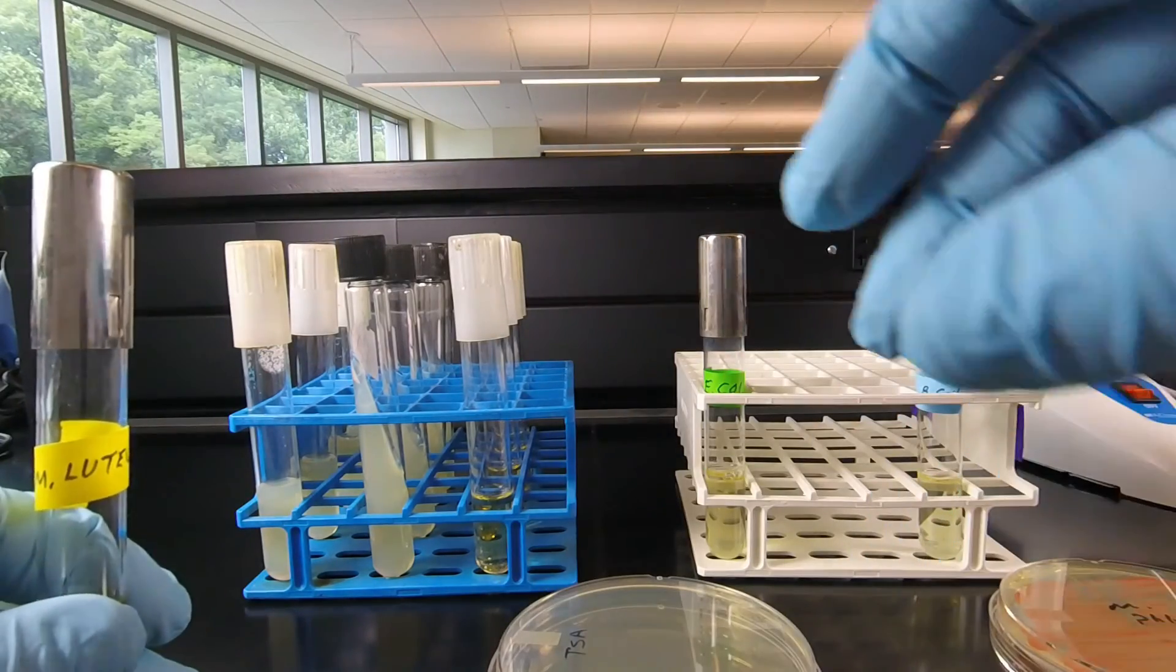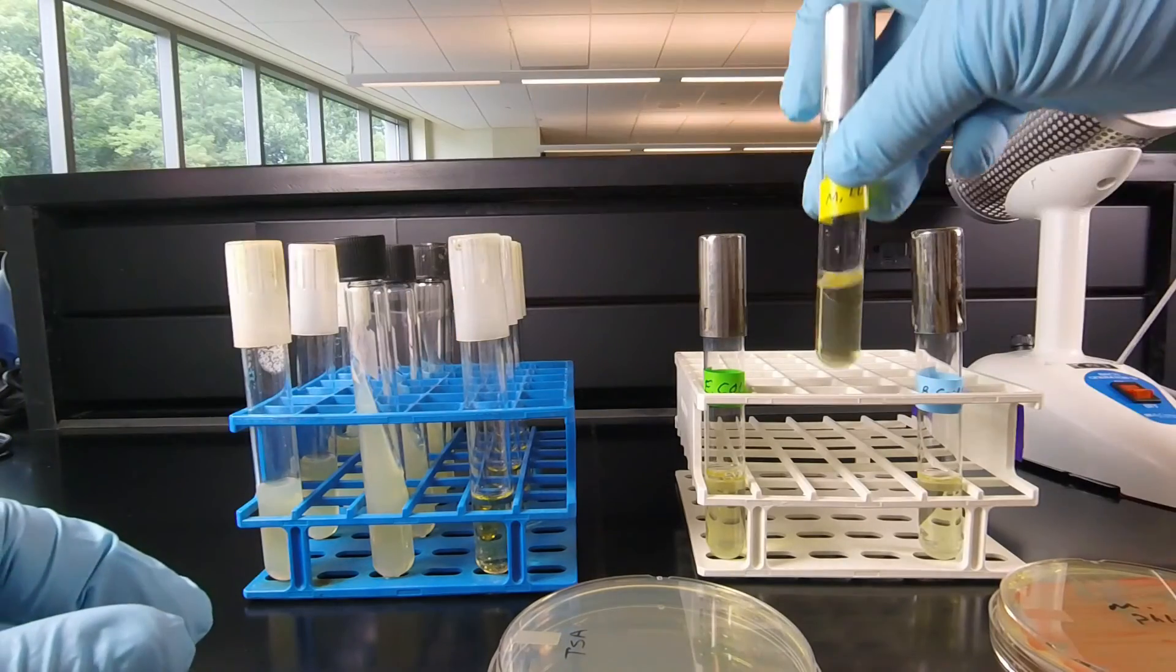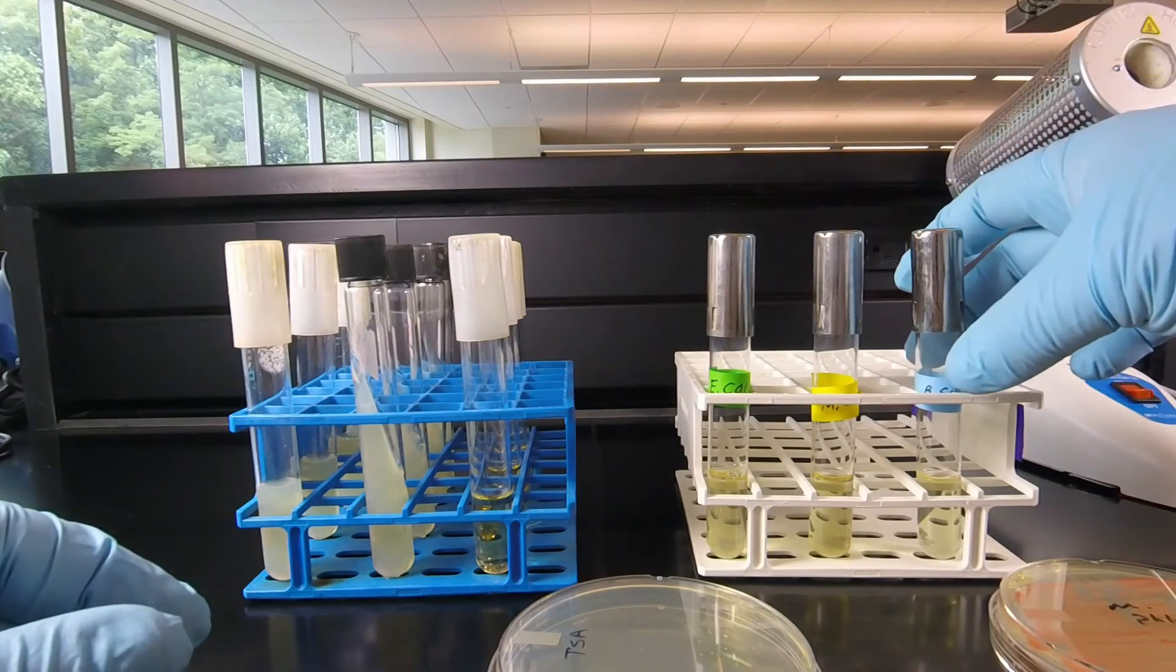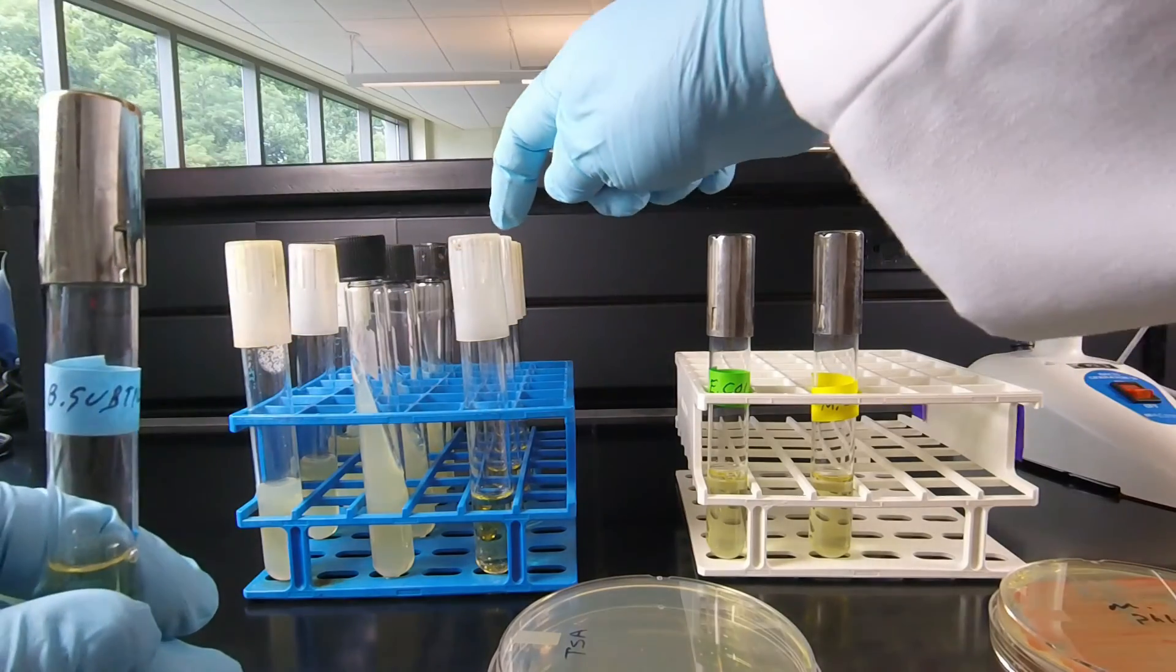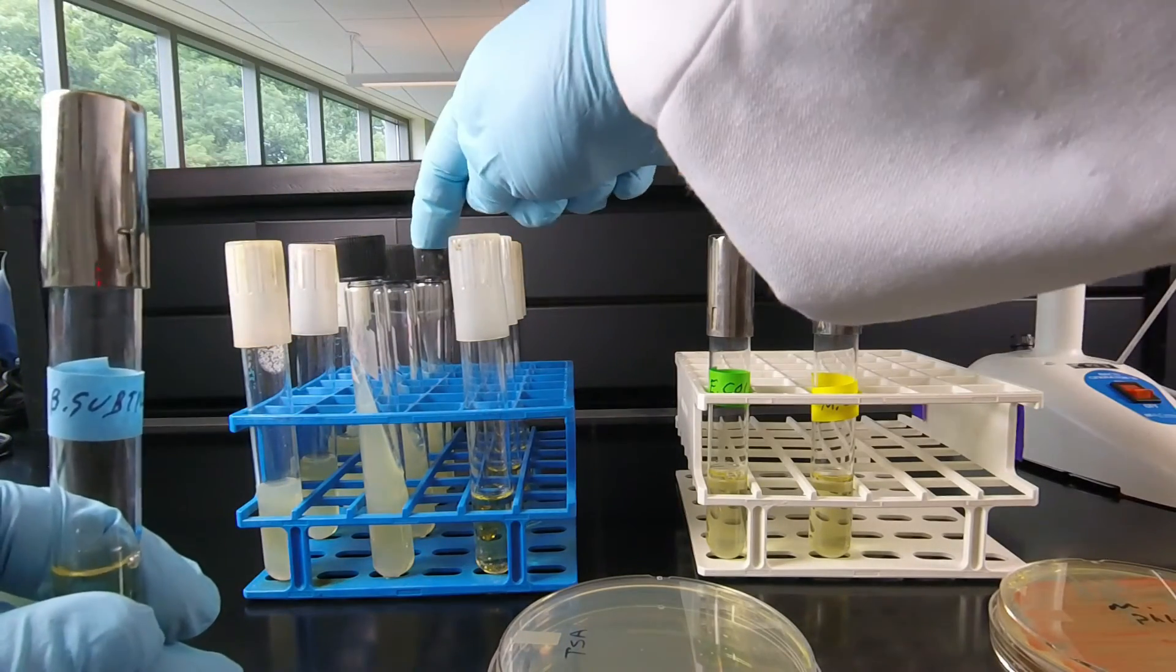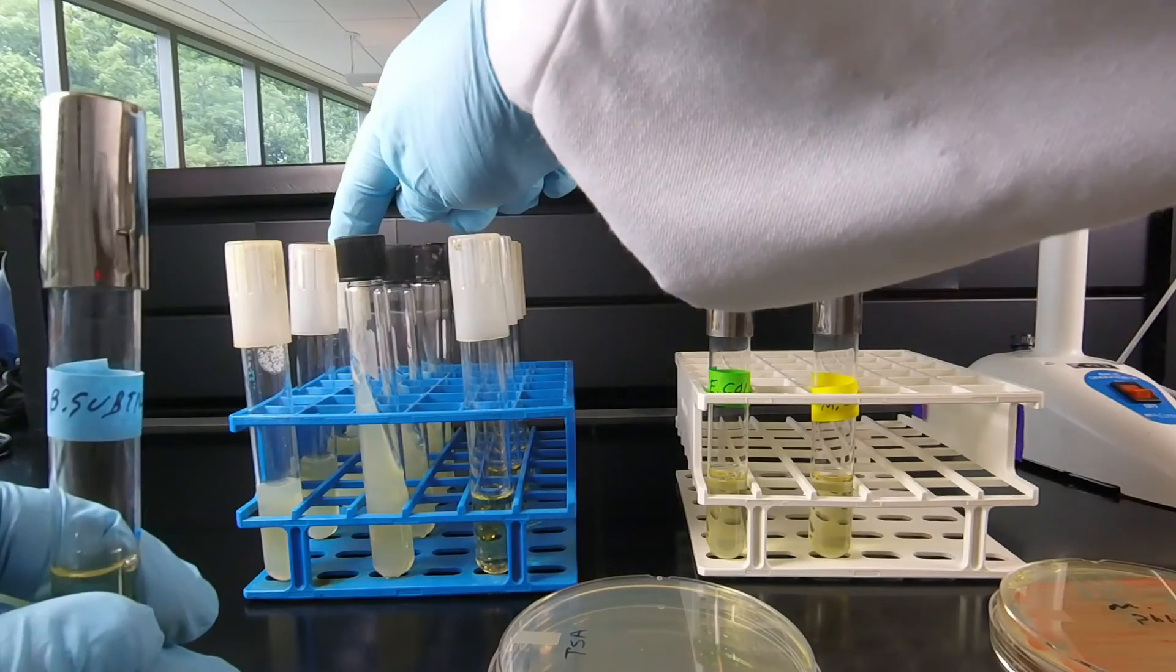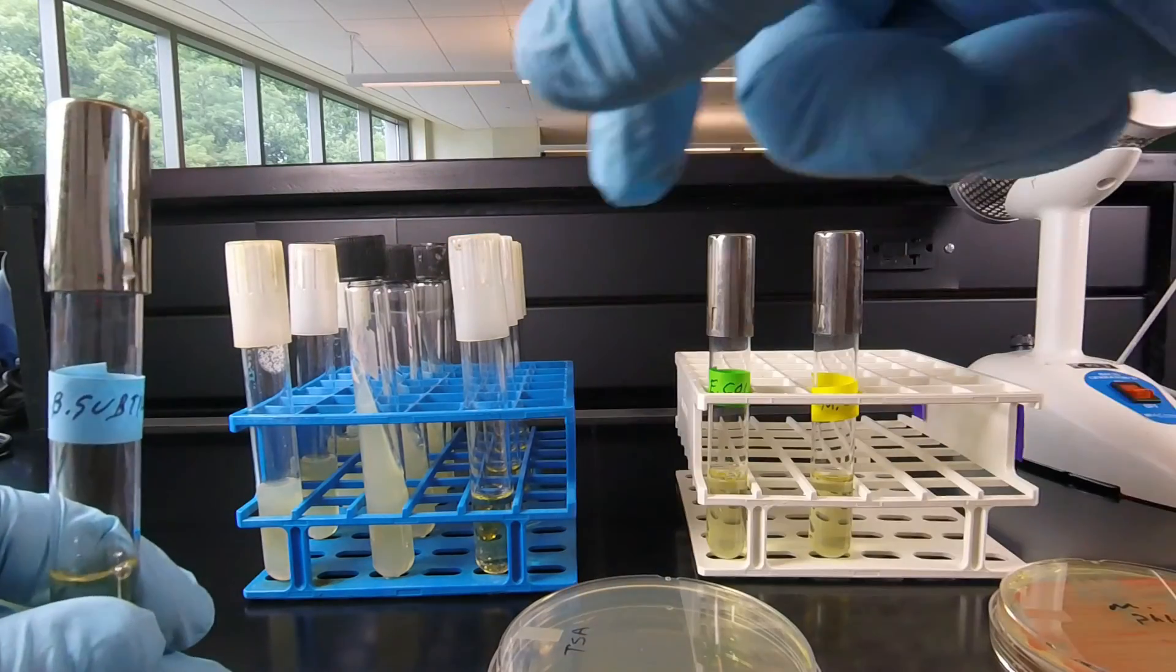So that's the eight inoculations you'll be doing. Meanwhile, your partner will take the other two bacteria—Bacillus subtilis first—and inoculate a third broth tube, a third slant tube, a third stab tube, and a third petri plate.